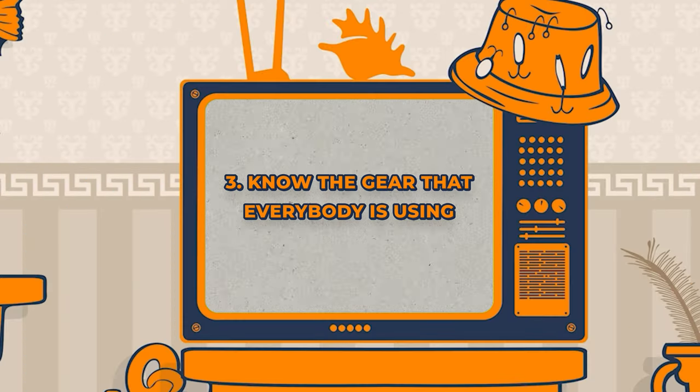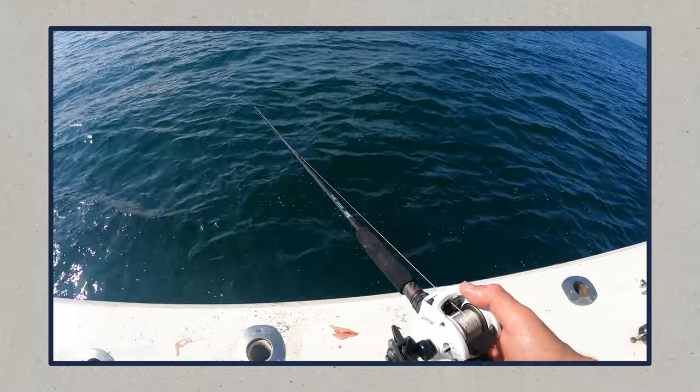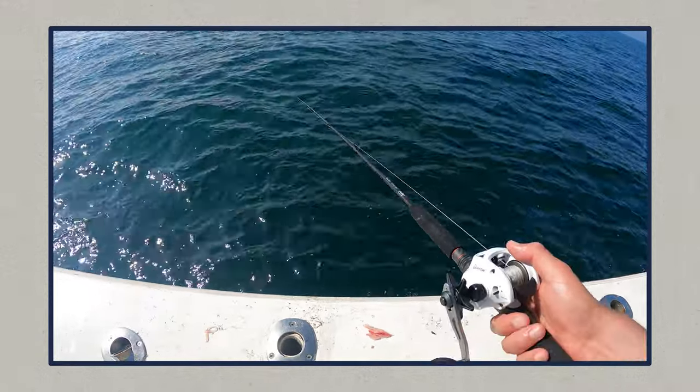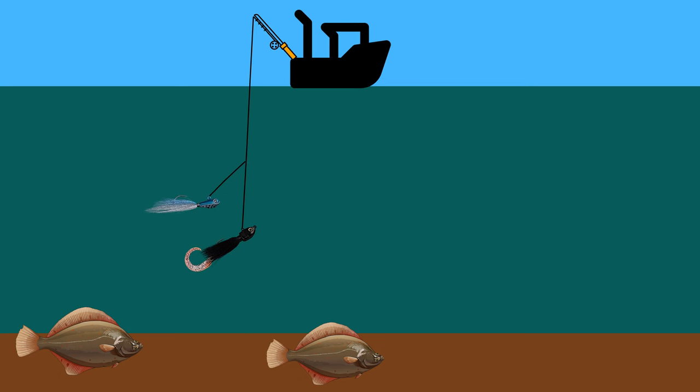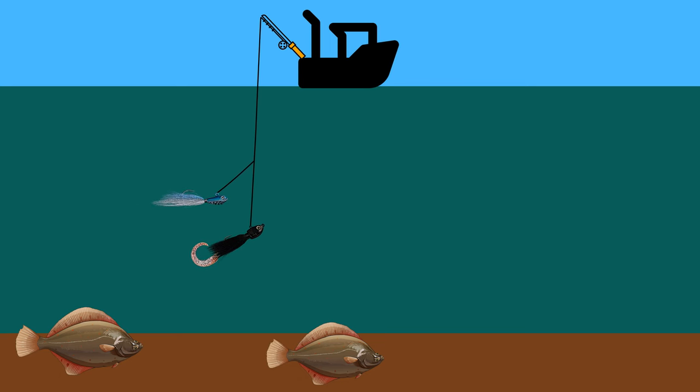That brings us to our next tip: you also have to know the gear everybody is using. If you think Bob is fishing a lot slower than you but he's got a broomstick as a fishing pole, the action he's putting on it — even though it looks slow — is probably quite dramatic. And the opposite could be true: if he's using a very soft fishing pole with a soft tip and a really erratic jigging motion, chances are he's actually not putting that much motion on the jig, meaning those fish are honing in on less action.